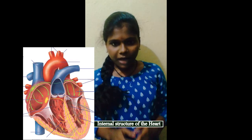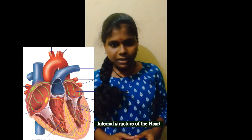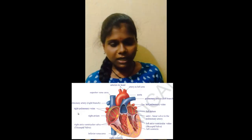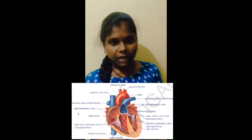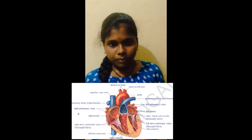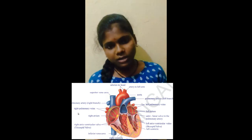Coming to the internal structure of the human heart, there are four parts. The upper ones are called the auricles and the lower ones are called the ventricles. The two auricles are separated from each other by the inter-auricular septum, and the two ventricles are separated by the inter-ventricular septum. These septa prevent the mixing of deoxygenated blood from the right side of the heart with oxygenated blood from the left side of the heart.